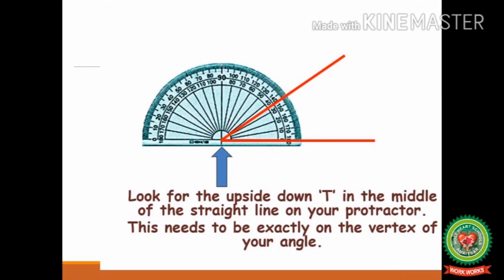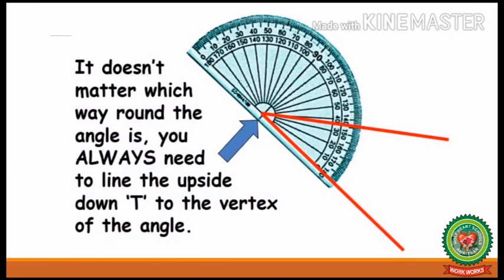Look for the upside down T in the middle of the straight line on your protractor. This needs to be exactly on the vertex of your angle. Remember, it doesn't matter which way round the angle is — you always need to line the upside down T to the vertex of the angle.